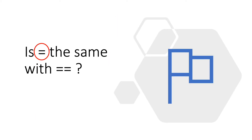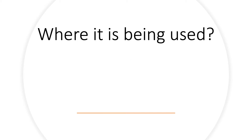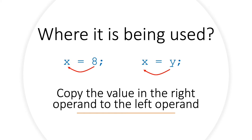Is the single equal sign the same as the double equal sign? The single equal sign is an assignment operator. It is used when you want to assign a literal value to a variable, or when you want to assign a value from one variable to another. This operation copies the value in the right operand to the left operand.